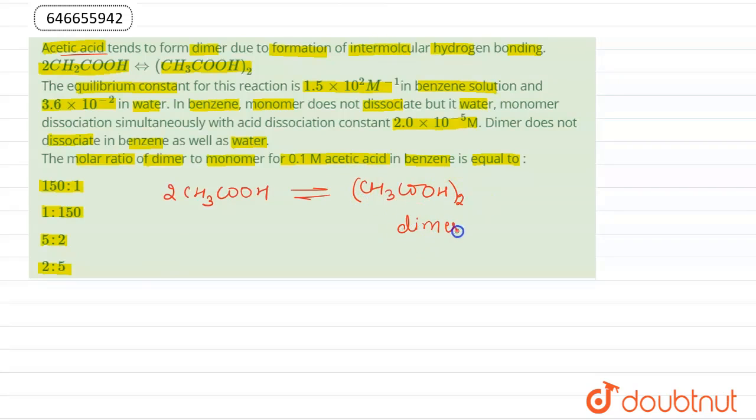We are given initial concentration of acetic acid is 0.1 M and its equilibrium constant in benzene is 1.5 × 10² and equilibrium constant in water is 3.6 × 10⁻².